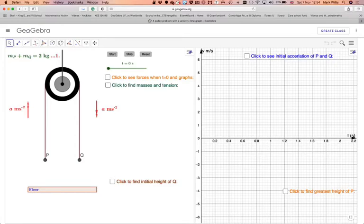So here we've got a pulley and we've got a particle P here of mass mp and a particle mq. All we know is that the sum of the masses will be two kilograms in this case. We're going to call that equation one.